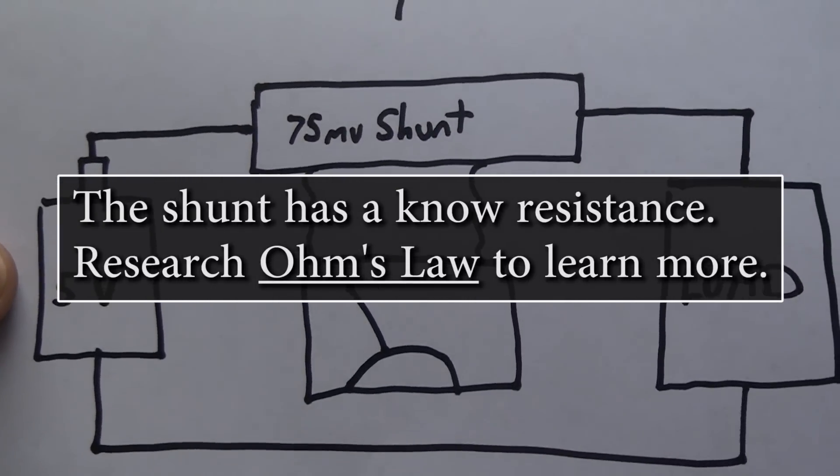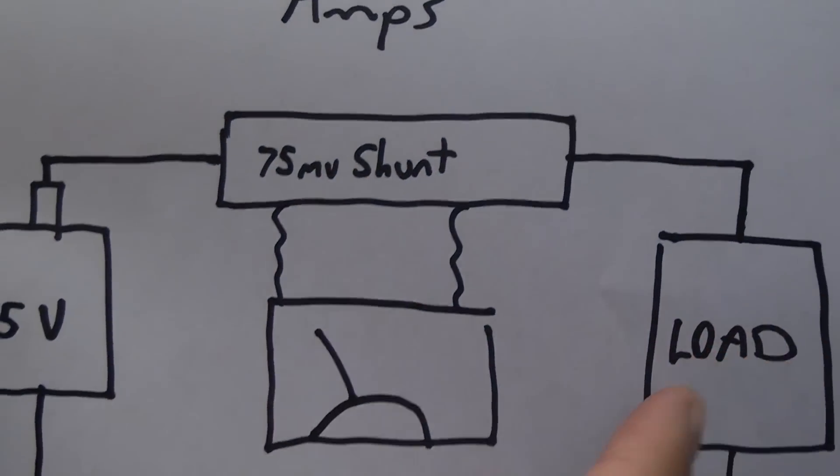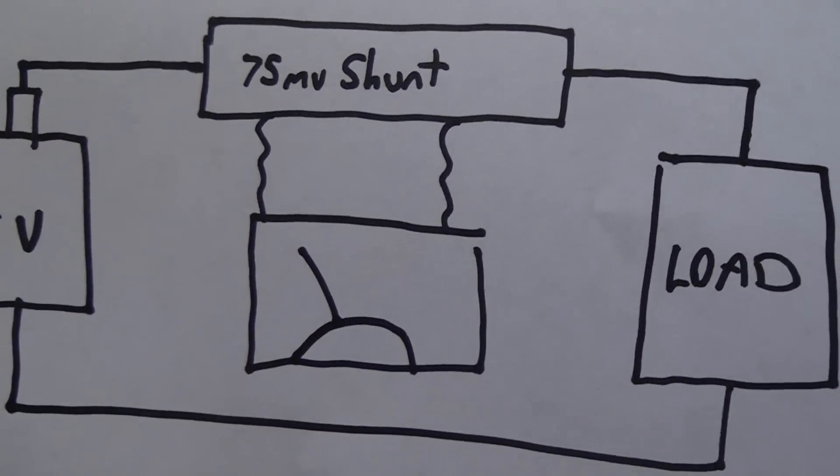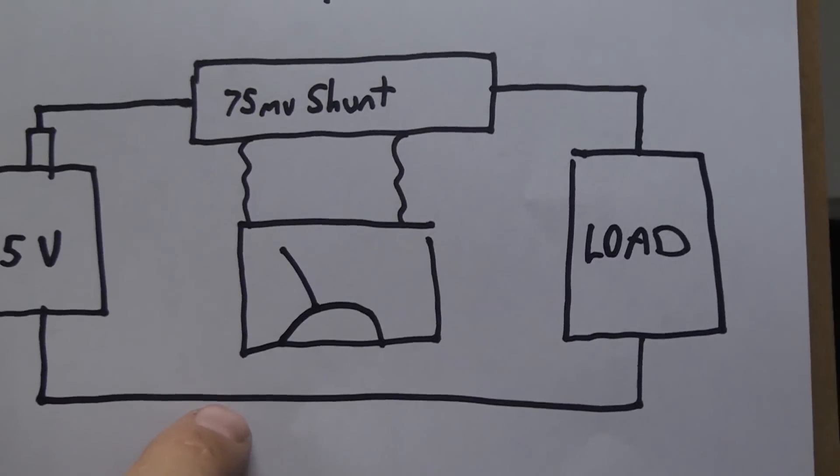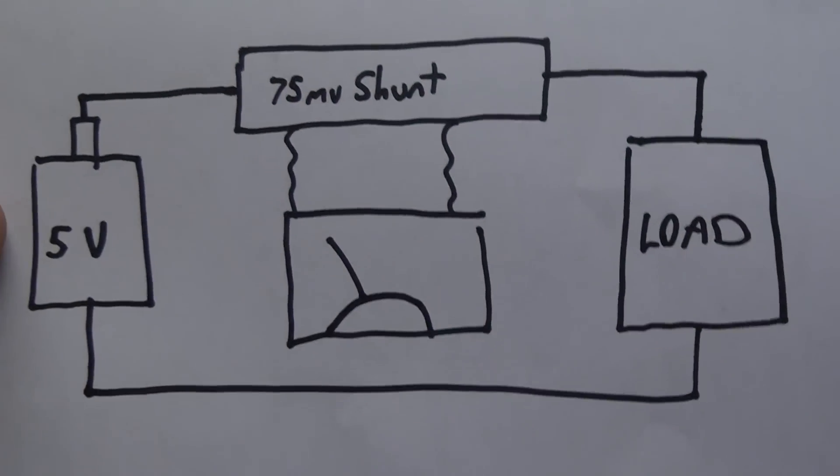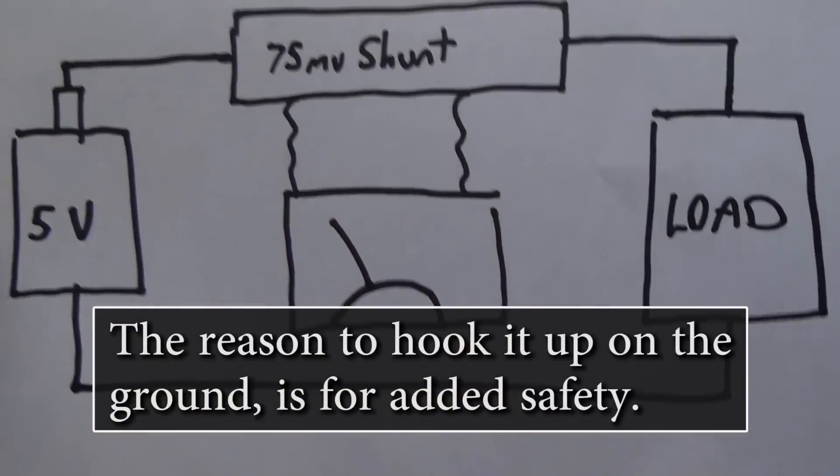If you hook it up and your meter pegs all the way up, you've got your leads switched, so you may need to switch those. Also, I drew the shunt up here on the positive, but I believe best practice is to have your shunt in line on the negative. So your two little squiggly wires would come down here - this is where your shunt would be.